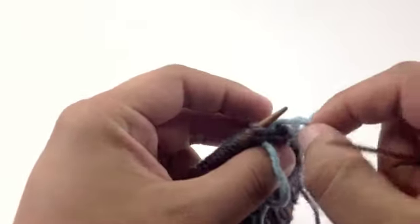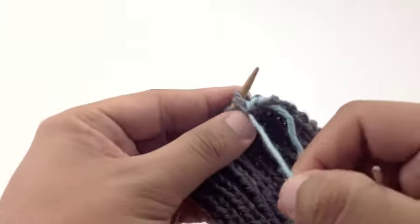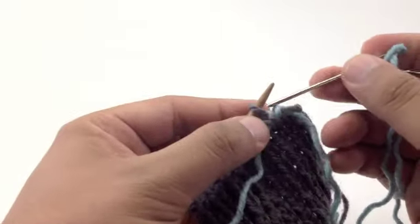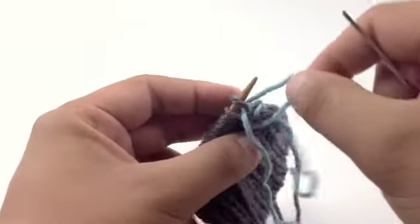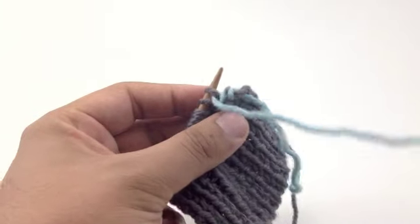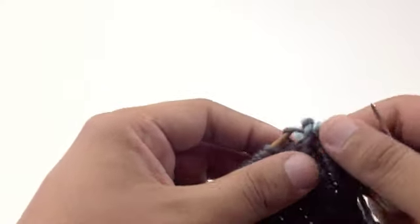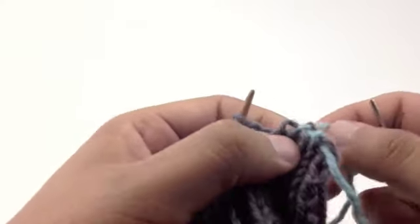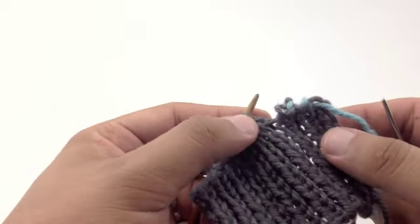Stitch gets tangled up real easily. And then one more purl-wise through the purl stitch. Then we're going to pull both of those stitches off of our main needle. So we're going to repeat steps two through five until we've bound off all of our stitches.